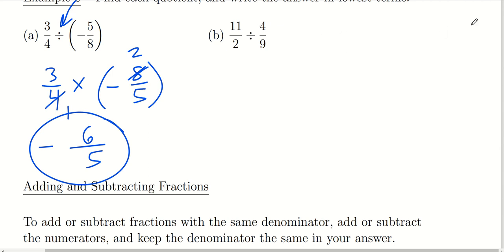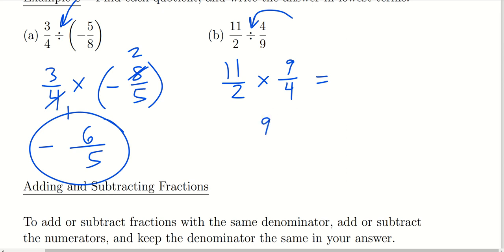For part B, we have 11 over 2 divided by the fraction 4 ninths. Focus on the operation — we're dividing. We rewrite it: keep, change, flip. Now that we've rewritten it, there are no common factors between numerators and denominators, so we just multiply tops and bottoms. Eleven times 9 is 99, and 2 times 4 is 8. The final answer is 99 over 8.